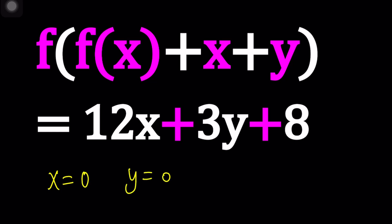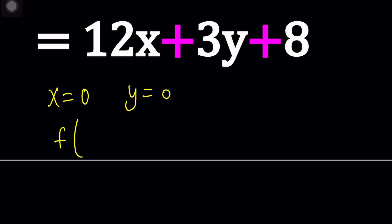So replace x and y with 0 at the same time. What happens if you do that? You're going to get f of 0 plus 0 plus 0 equals 8. Cool. I mean, that doesn't give me a lot of information. But it kind of gives me something.